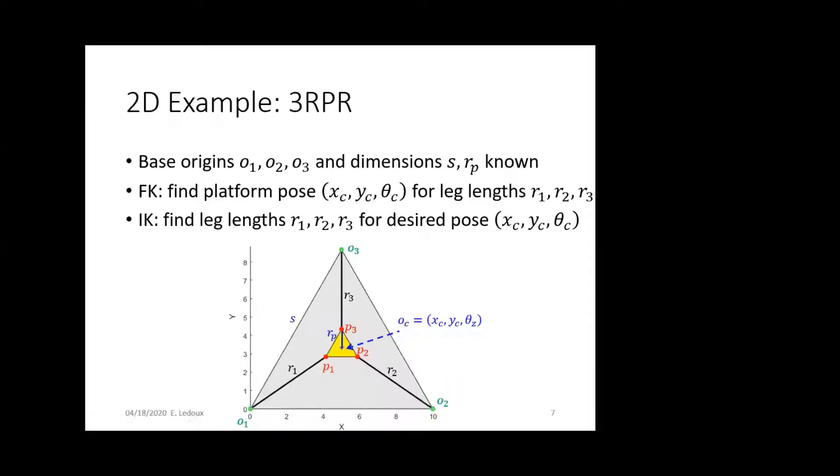Here's an explanation of the math for the 3-RPR robot. You can see here, the base is the large gray triangle, the end effector is this yellow triangle, and each R here is the leg length. So for forward kinematics, we have to find a platform pose given each of these leg lengths, and then inverse kinematics would be finding the leg lengths for the desired pose.